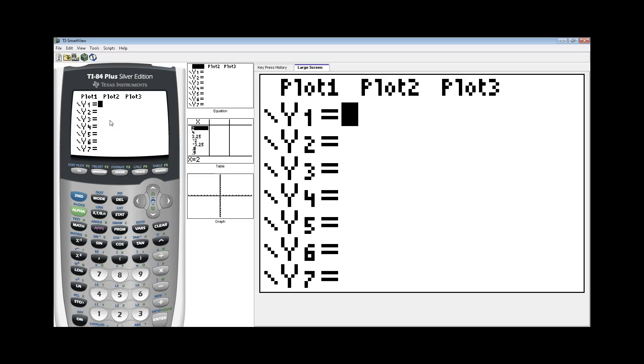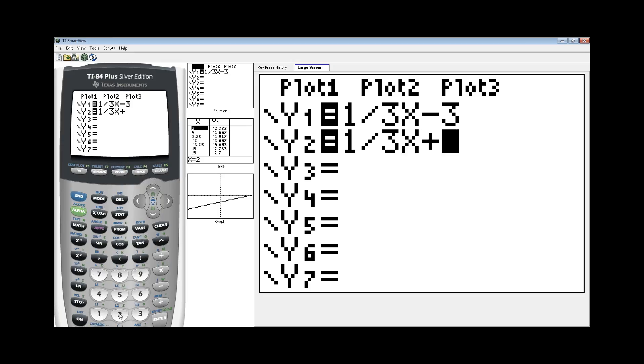So let's start with y1. Our first equation was 1 third x minus 3. Going down with the cursor, and our second equation was 1 third x plus 2.